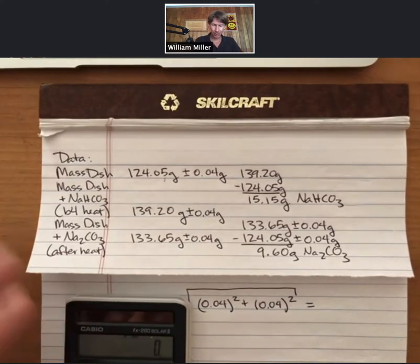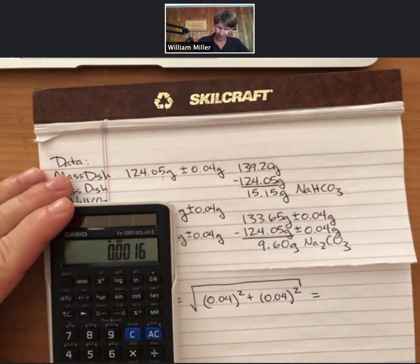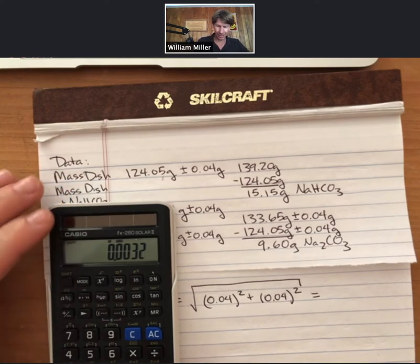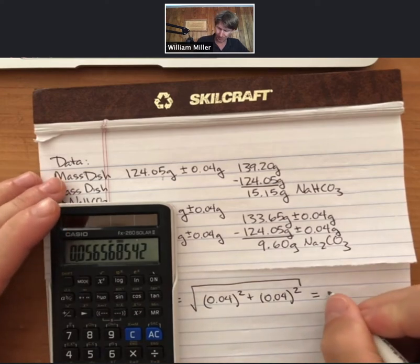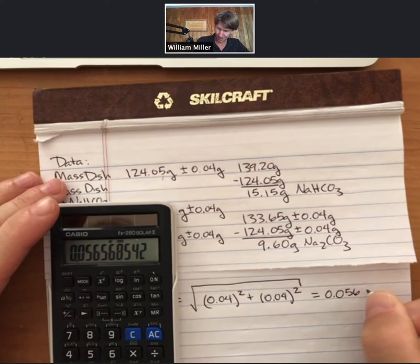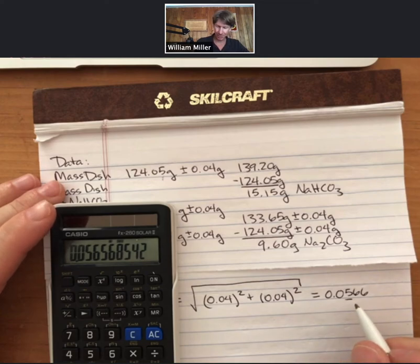I will now write that in: 0.04 squared plus 0.04 squared. Sum it, then take the square root. I have to hit the shift button to get my square root. I get 0.0566 and some more digits, but since I have 0.05, I'll just keep it right there: 0.0566.